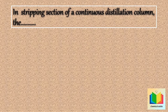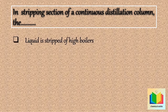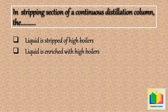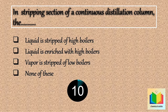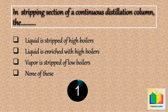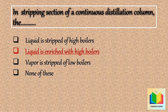Now next question: In the stripping section of a continuous distillation column, the options are: liquid is stripped of high boilers; liquid is enriched with high boilers; vapor is stripped of low boilers; or none of these. Your time starts now. 10, 9, 8, 7, 6, 5, 4, 3, 2, 1. Stop. So the answer is: Liquid is enriched with high boilers.